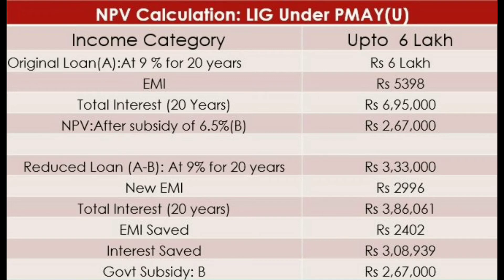Under the EWS category, the subsidy amount is around 2,67,000 and the LIG category subsidy is around 5,99,000. For the MIG categories, the figures are 2,99,000 and 5,99,000 respectively.